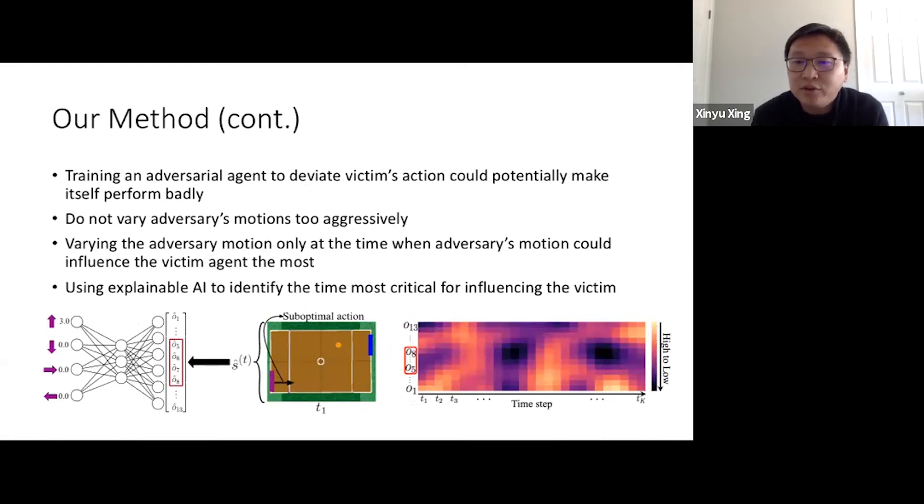As I mentioned earlier, the motion of the blue paddle is part of the network input. Using explainable AI approach, we can find the corresponding critical time step. Again, let's take the example of the Pong game. The input feature dimension 5 to 8 indicates the motion of the blue paddle. Using explainable AI, we can obtain a heatmap. This heatmap indicates the importance of this input feature dimension across time.